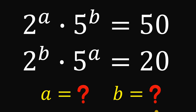For today's video, we will answer an algebra challenge given by one of our followers. The question goes like this: given these equations — 2a times 5 raised to the power of b equals 50, and 2 raised to the power of b times 5 raised to the power of a equals 20 — our goal is to find the values of a and b.